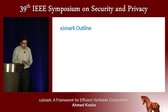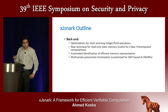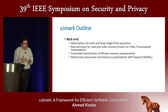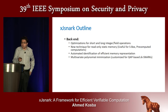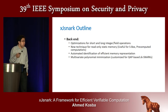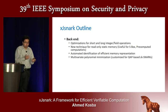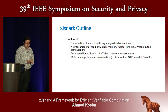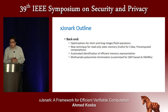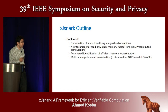Under the hood, the backend implements optimizations for both short and long integer operations. We also have a new optimization for read-only static memory, which helps for techniques like the S-box in AES and pre-computed computations, which can appear in floating-point operations when it is expensive to perform many operations in the circuit. We also do automated identification of the efficient memory representation. Additionally, to reduce the number of multiplication gates or constraints further, we apply multivariate polynomial minimization, implemented in a version customized for QAP-based ZKSNARKs.